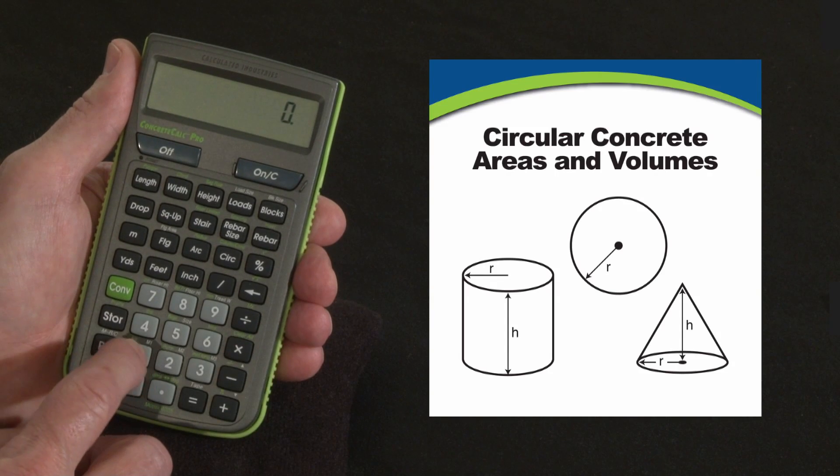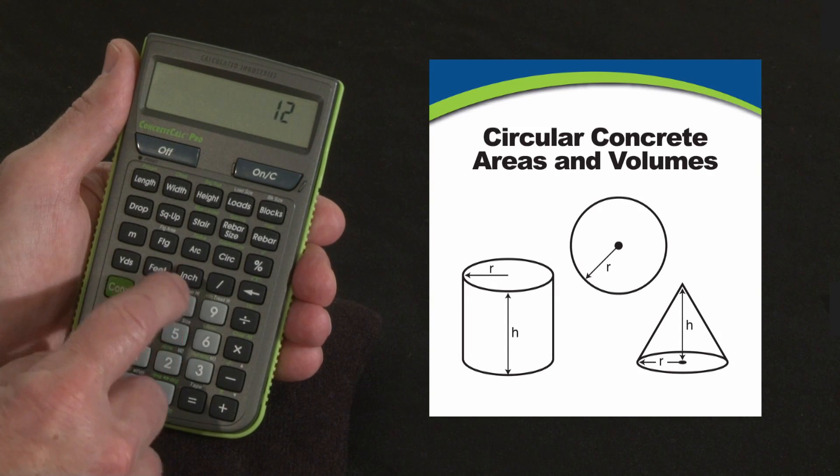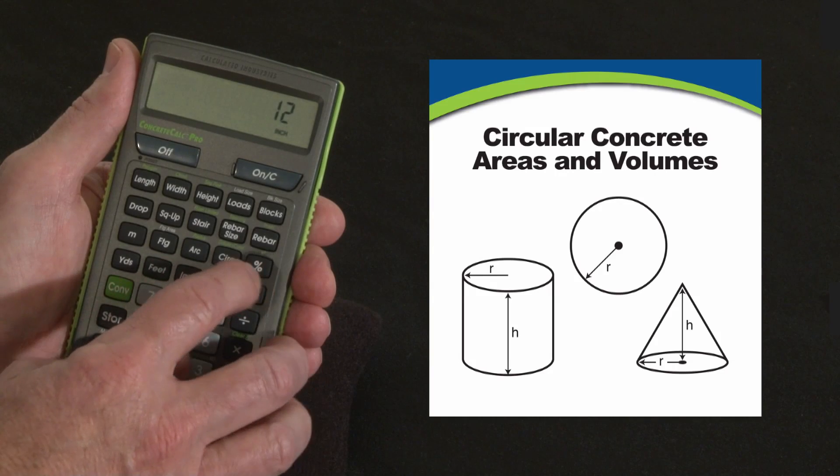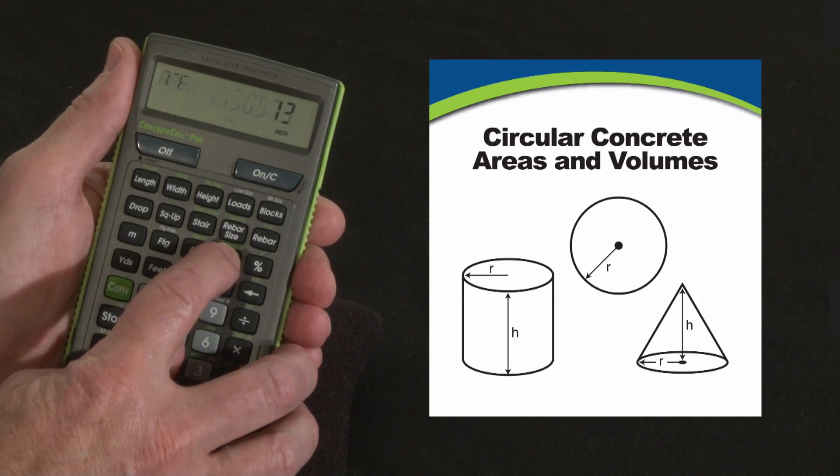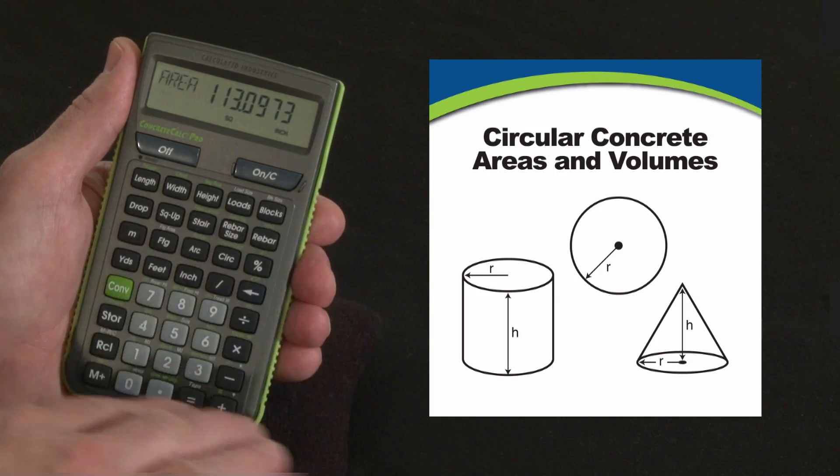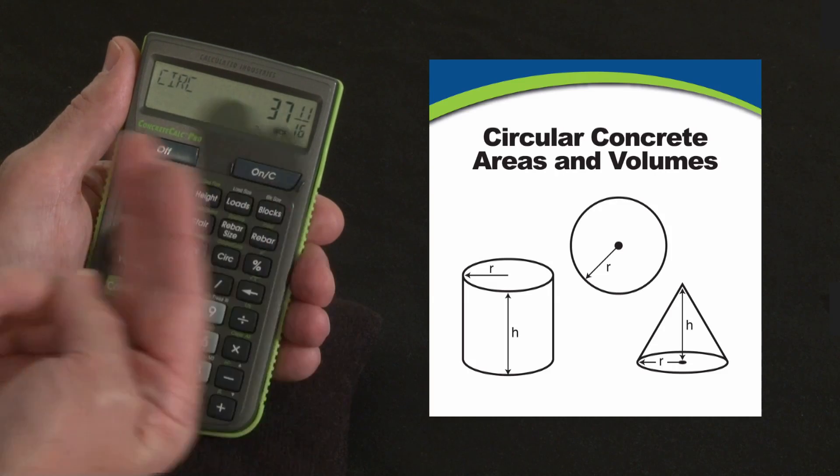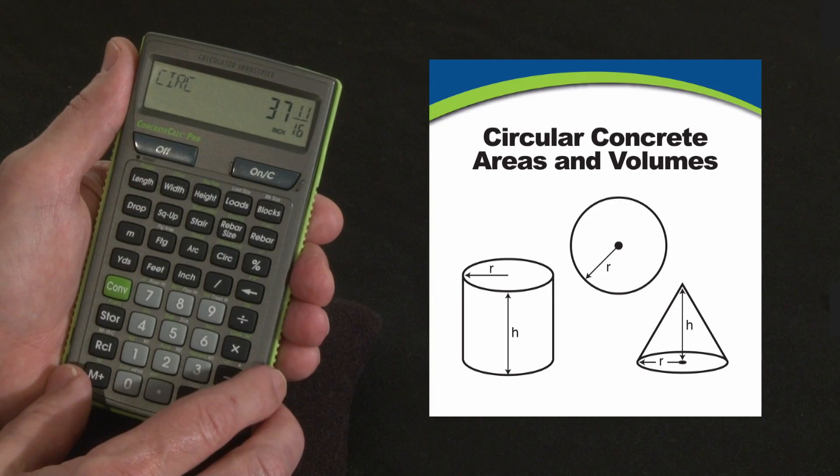First off, the way you enter in a circle is just put in the dimension. Let's make it a 12 inch diameter. So it says diameter there. Press it again, it gives me the surface area on top of that circle. Press it again, it gives me the circumference or the perimeter around that circle. That's how you enter circles.